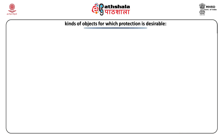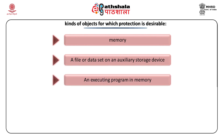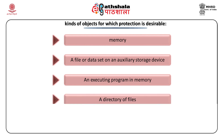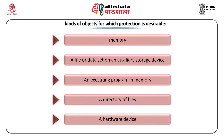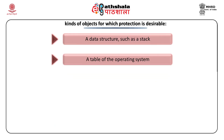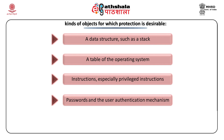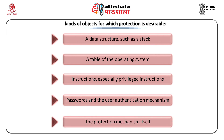The first question is: what kinds of objects for which protection is desirable? The list includes memory, a file or data set on an auxiliary storage device, an executing program in memory, a directory of files, a hardware device, data structures such as a stack, a table of the operating system, instructions especially privileged instructions, passwords and the user authentication mechanism, and the protection mechanism itself.